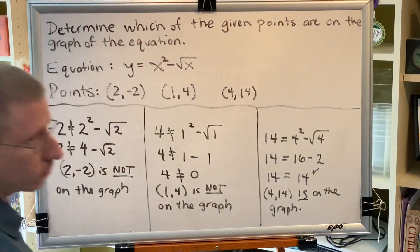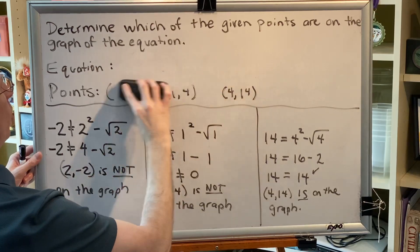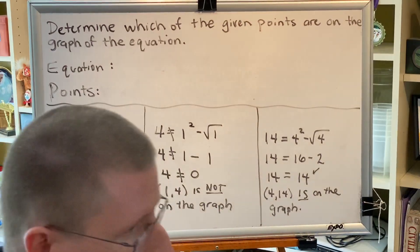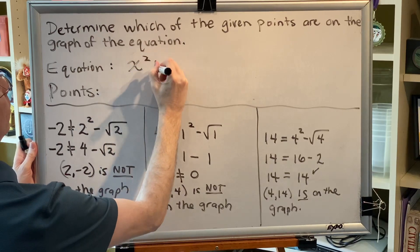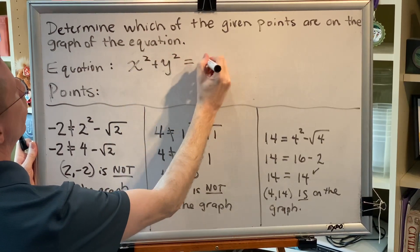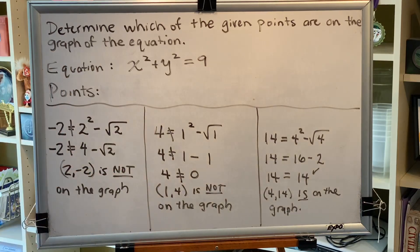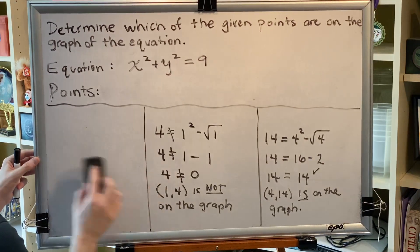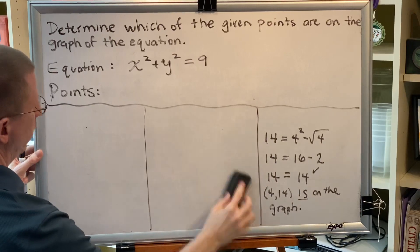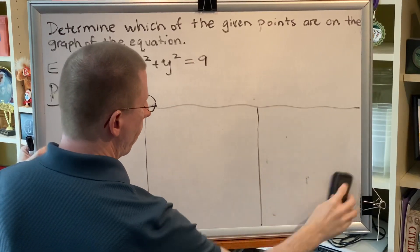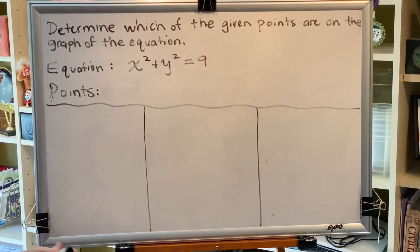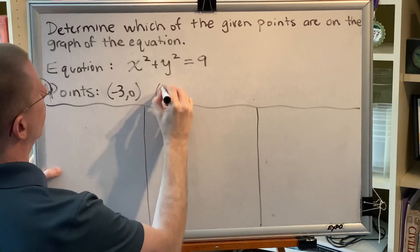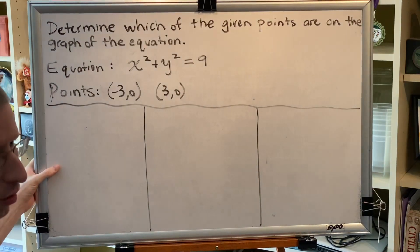Let's try another problem with a new equation and new points. The equation this time is x squared plus y squared equals 9. If you study your equation forms, you will learn that this is the equation of a circle, which is studied in college algebra. The points we're asked to examine are (-3, 0), (3, 0), and (√3, √3).